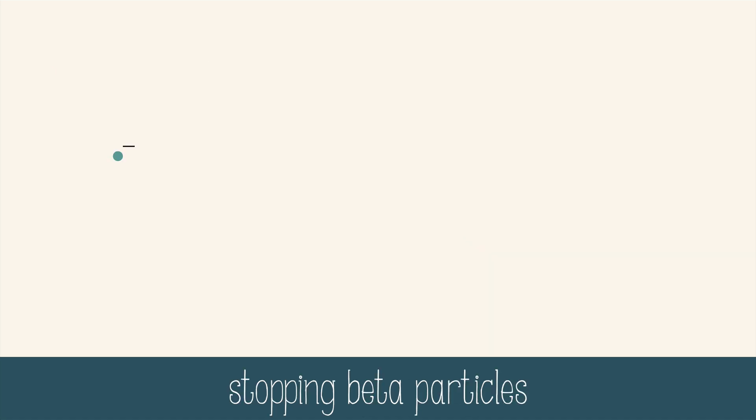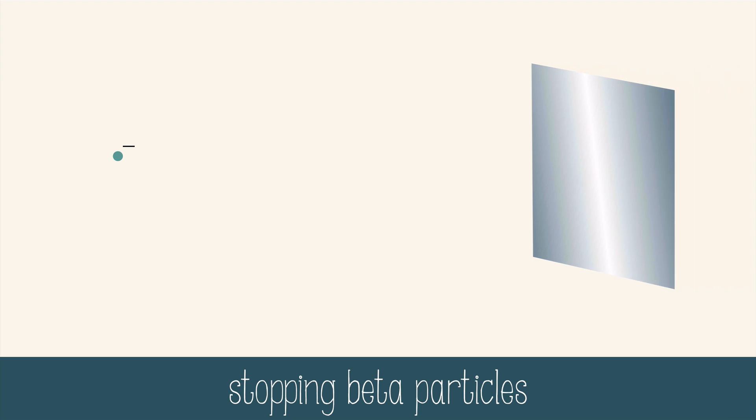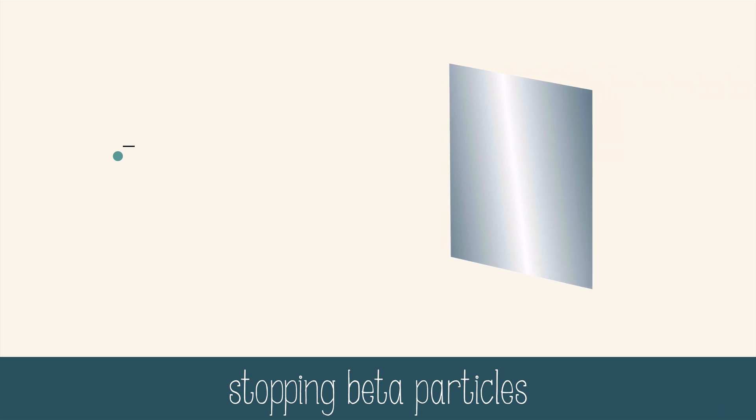Beta particles are more penetrating than alpha particles, but can be stopped by a few millimeters of body tissue, thin pieces of wood, or aluminum foil.